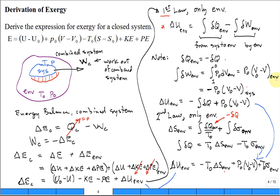The change in volume of the environment is related to the change in volume of the system: a positive change in volume of the environment corresponds to a negative change in volume of the system. So we convert those environment volumes to system volumes. The updated first law for the environment only gives: the change in internal energy of the environment equals minus the integral of delta Q (from the perspective of the system) plus P naught times (V_naught minus V), where both volumes are the system volume — that is, the system volume at the dead state minus the system volume initially.